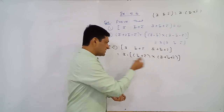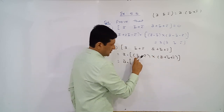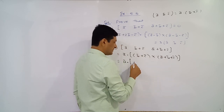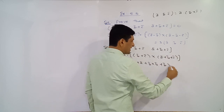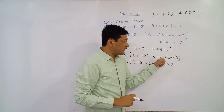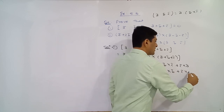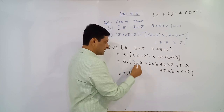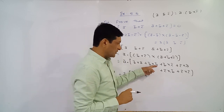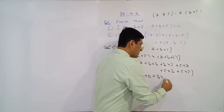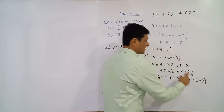We first perform the cross product. Taking cross product of b̄ with all three terms: b̄ × ā, plus b̄ × b̄, plus b̄ × c̄. Then taking cross product of c̄ with three terms: plus c̄ × ā, plus c̄ × b̄, plus c̄ × c̄. Now simplify: keep b̄ × ā as is; cross product of b̄ with b̄ is zero; keep b̄ × c̄, c̄ × ā, and c̄ × b̄ as is; and c̄ × c̄ is also zero.